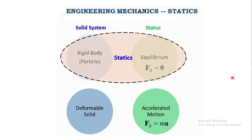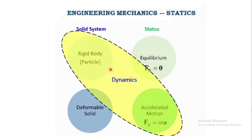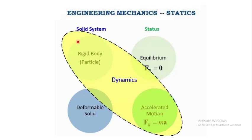When a rigid body is involved with an accelerated motion of the system, we study dynamics. The type of motion generated can be translation, rotation, or a combination of both — called general plane motion. Whenever this scenario arises we study dynamics, and Newton's second law applies.